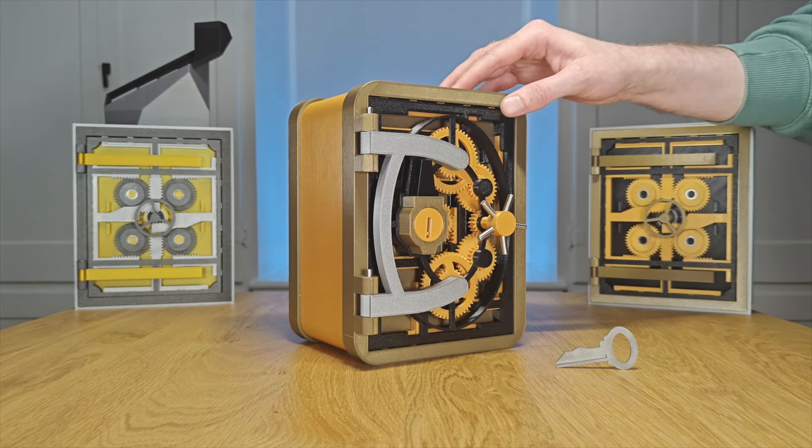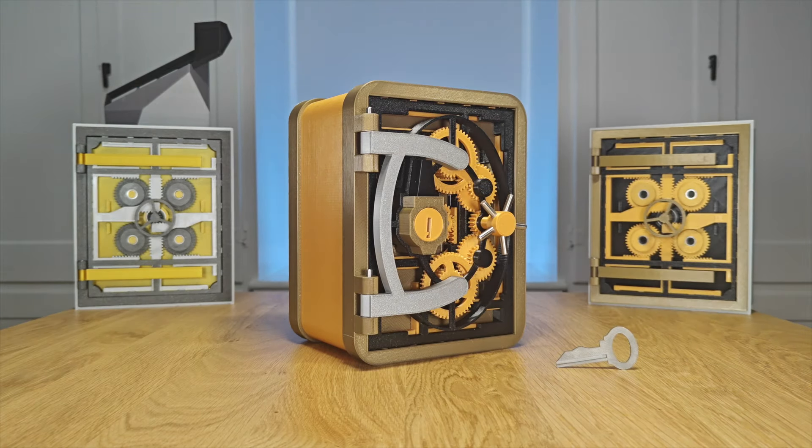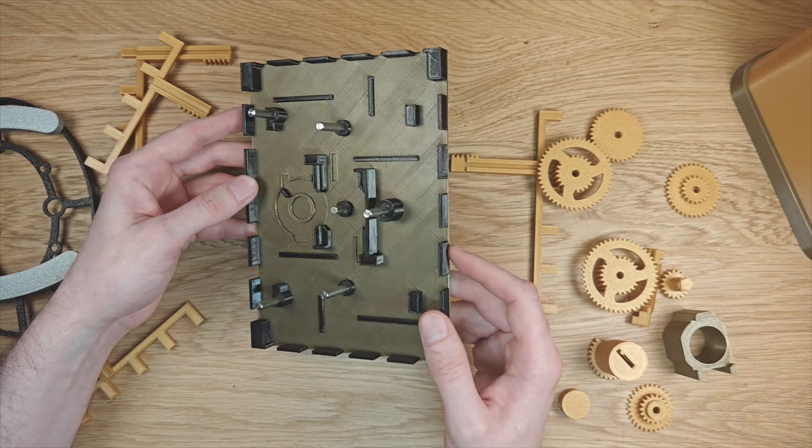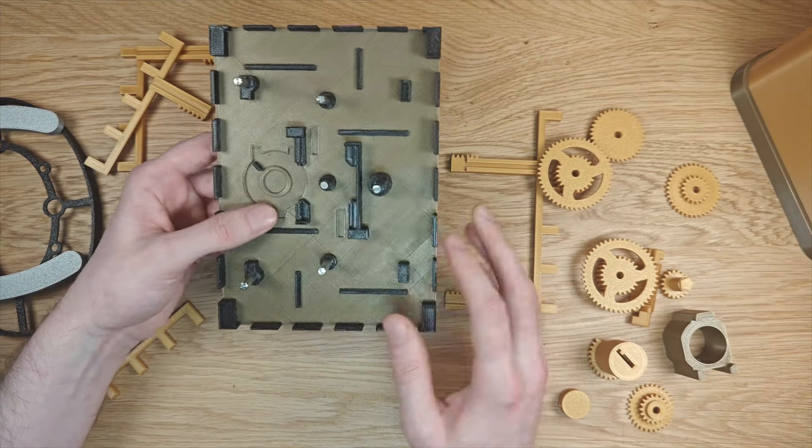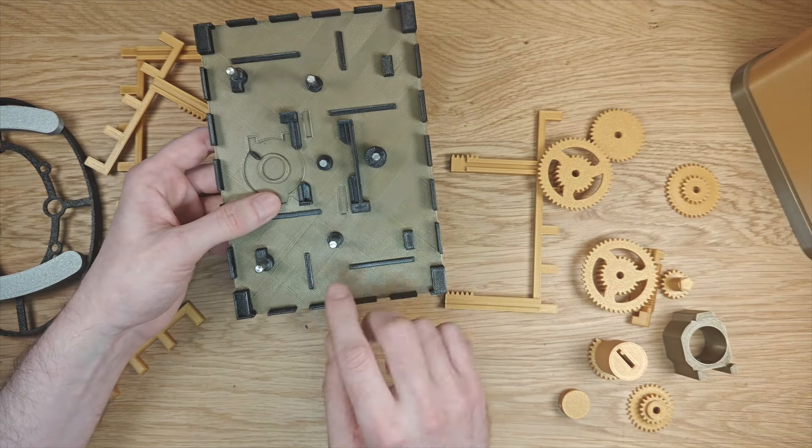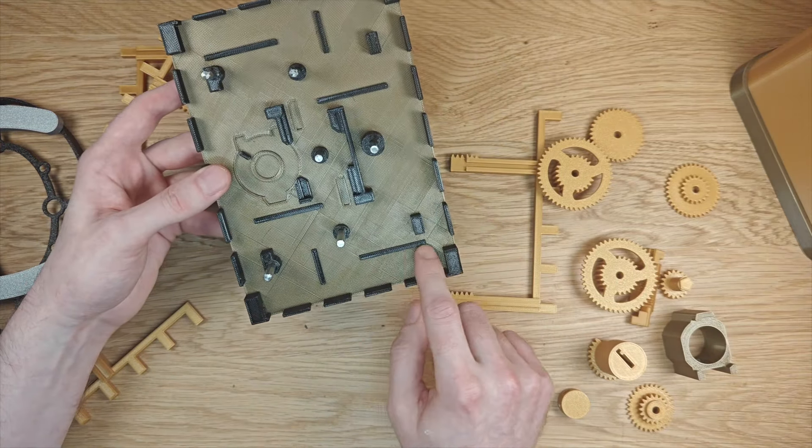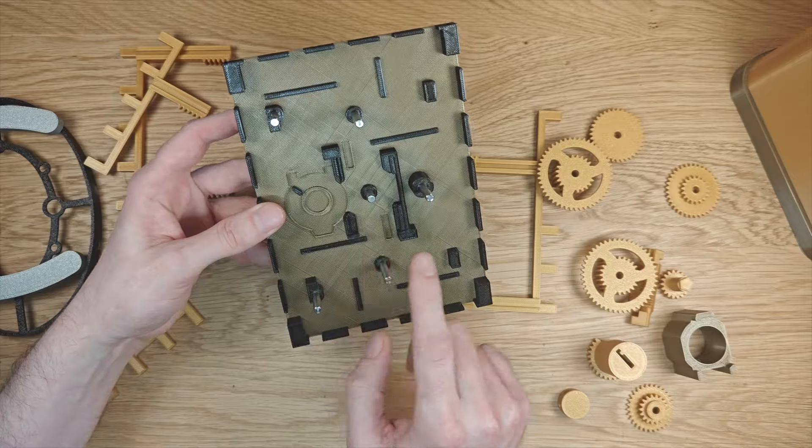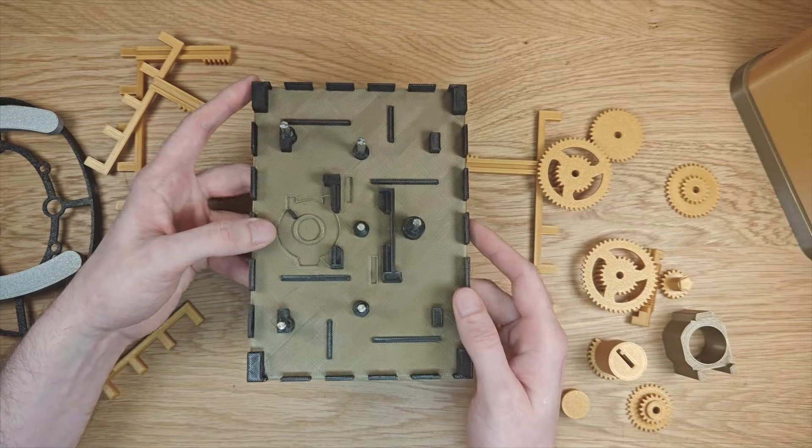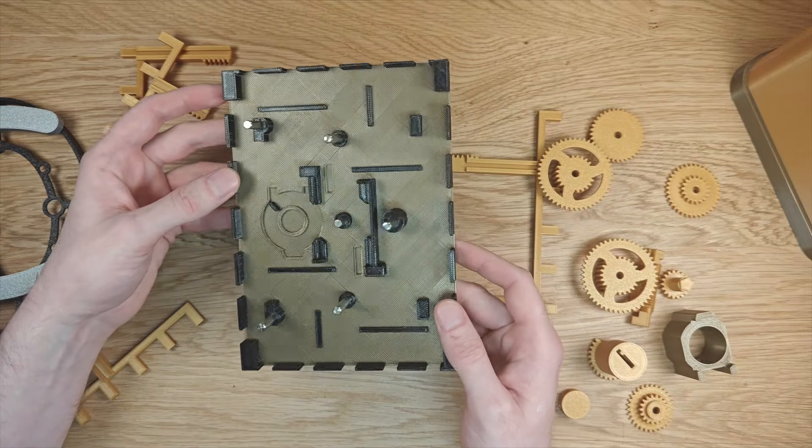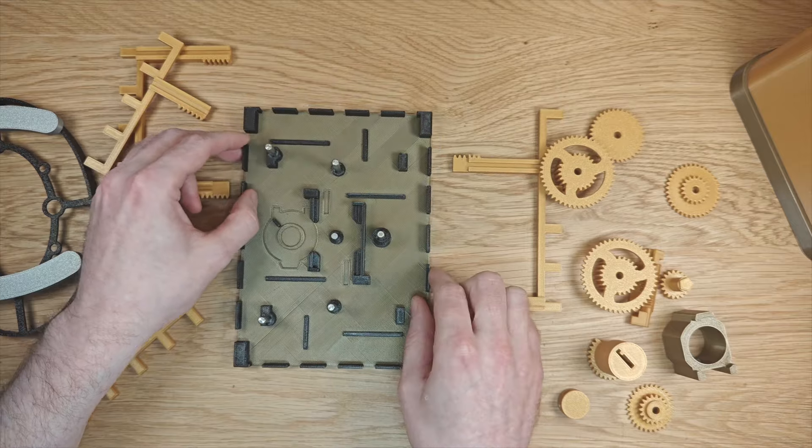So without further ado, here's how I put this thing together. What I have here is the core of the door. This is what everything's going to be mounted on and you can see I've already glued a few metal dowels in place. There are a bunch of different tracks and cutouts and each of them has a particular use which will make sense as we get into it.